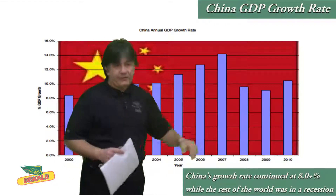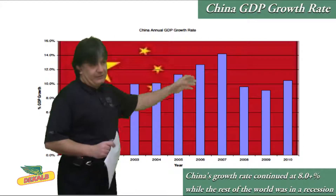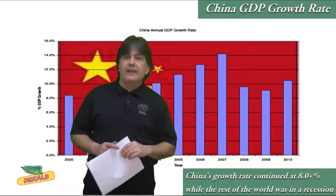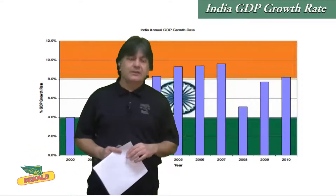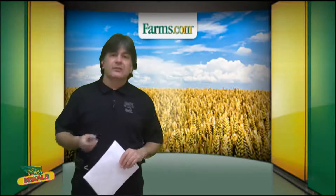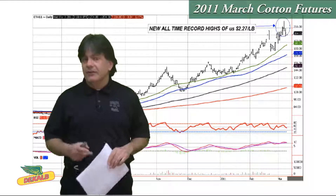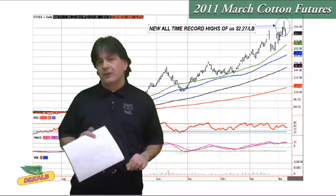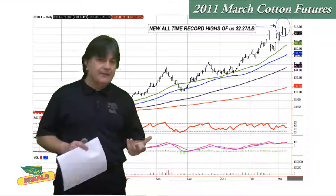During that global recession, we actually had a couple of countries like China actually growing through that recession. In fact, it was growing at 8-plus percent through that period, and India was also growing at 8-plus percent. Both these countries contributed — they were the engines of growth that took the global economy out of that recession. Since 2009, we've recovered in 2010. The economy in 2011 looks good, looking for 4.4% growth globally, and it's caused better demand with a lack of supply.